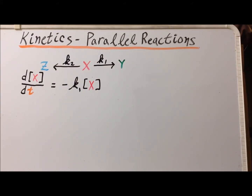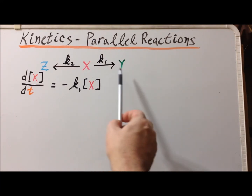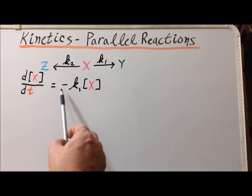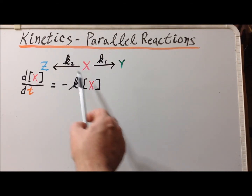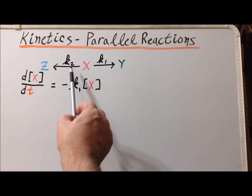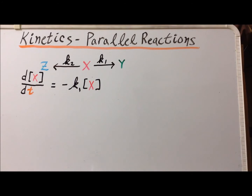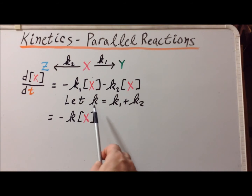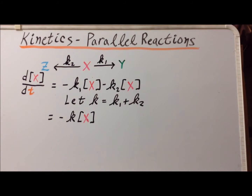Let us calculate the rate of change of the concentration of X. Since it's first-order with rate constant K1, the change in concentration of X with respect to time is minus K1 times [X]. But we also lose X with rate constant K2 as it converts into Z, so the total is minus K1[X] minus K2[X]. We assign K = K1 + K2, replacing the two rate constants by a single one, so d[X]/dt = -K[X], where K is still a first-order rate constant.